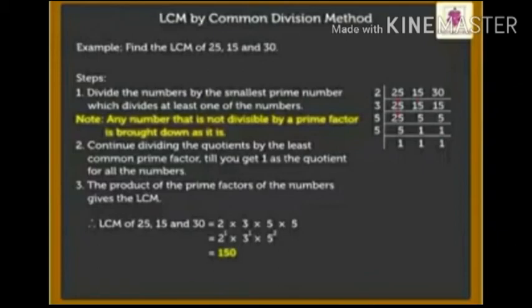Now we have 5 as dividend. It is a prime number, so divide 5 by 5, we get 1. Now we have 1 as a quotient for all the numbers.